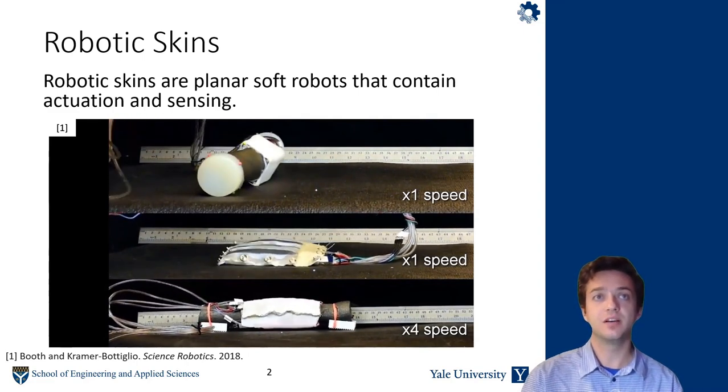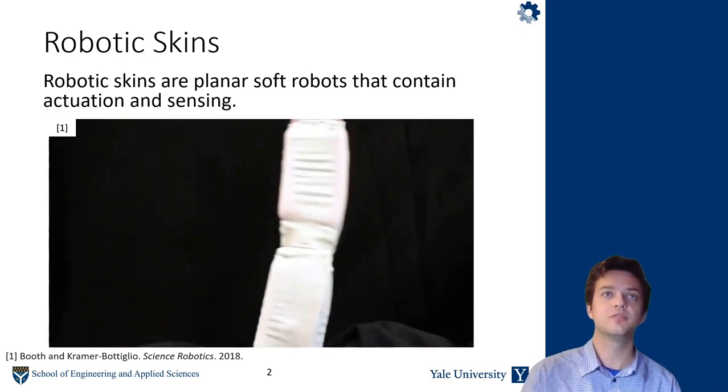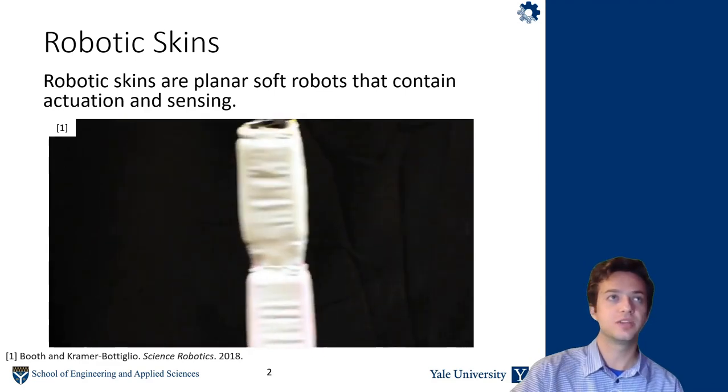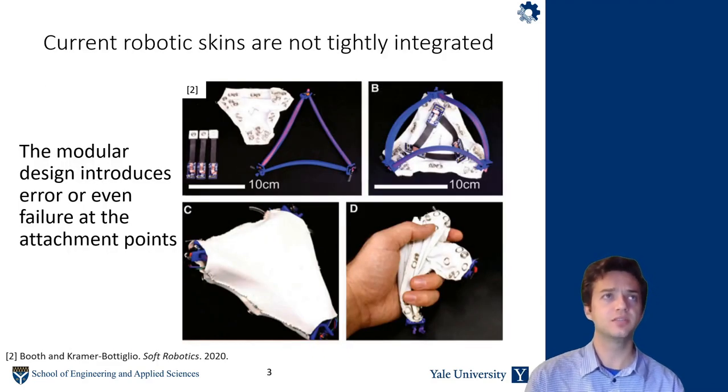So the robotic skins have capacitive strain sensors, they also have pneumatic actuators, so they can add robotic functionality to different devices.